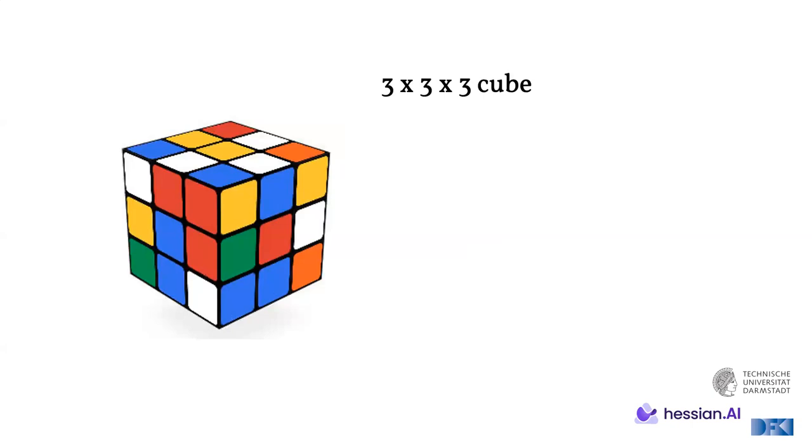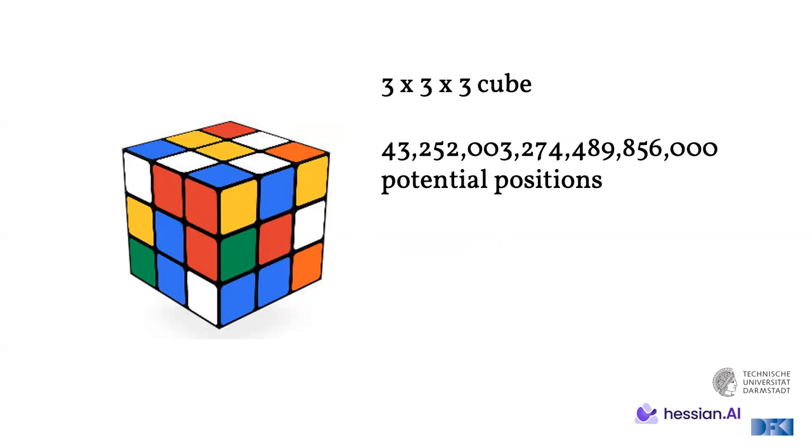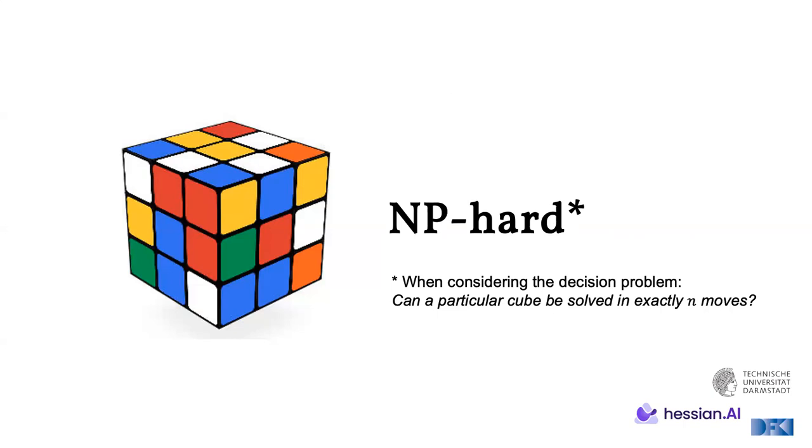Let's make an example with the Rubik's cube. Here you see the famous 3x3 cube, and there is a number of potential positions that I don't even know how to pronounce. It's a huge number. But interestingly, from any position, from any scramble of the cube, there's at most 20 moves necessary to solve said cube. This is also referred to as God's number, oftentimes because you would have to be God to remember all these solutions for this cube. It is known that the Rubik's cube is NP-hard, actually. So when we consider a decision problem, can a particular cube scramble be solved in exactly N moves specified?